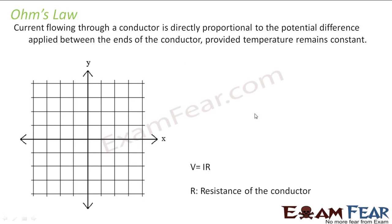So what is Ohm's law? Ohm was a scientist who performed an experiment and from his experimental observation he found that as the potential difference between the ends of a conductor increases, the current flowing through the conductor also increases. So he said that the current flowing through a conductor is directly proportional to the potential difference applied between the ends of the conductor, provided temperature remains constant.